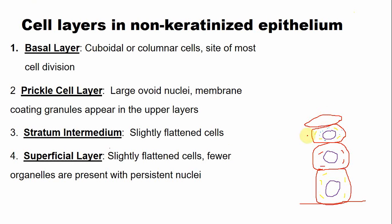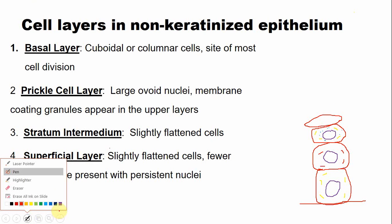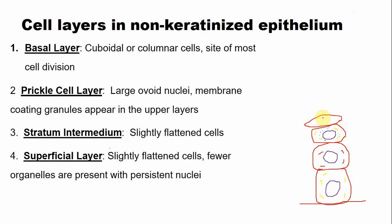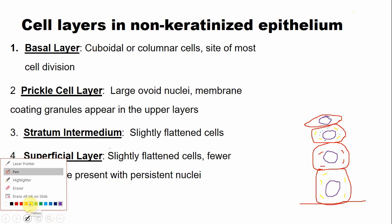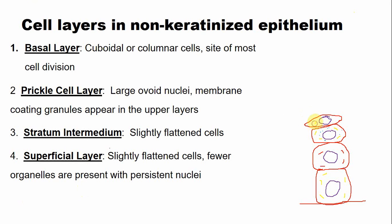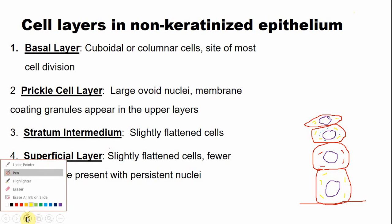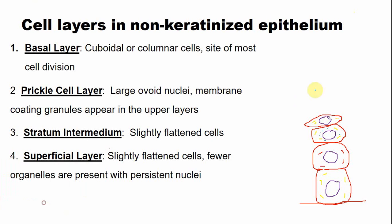In the keratinized epithelium, the cells are completely flattened with no organelles, but in the non-keratinized epithelium, the organelles are present, though in a very smaller size. Tonofilaments are also there, glycogen granules are there, and the nucleus is also present — all organelles are present but in a smaller number and smaller size. These are the four layers present in a non-keratinized epithelium.